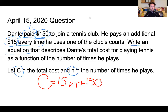So, c equals 15n plus 150. That's it. All you needed to do was write an equation. We have c, our total cost, equals 15 times the number of times he plays, plus 150. Great job.